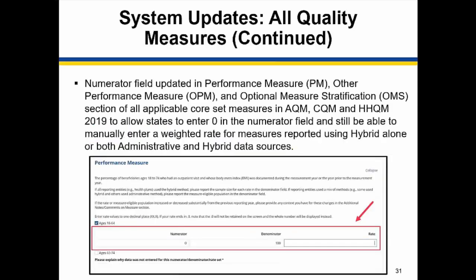The numerator field within the Performance Measure, Other Performance Measure, and Optional Measure Stratification section of all applicable core measures has been updated to allow states to enter zero in the numerator field and still be able to manually enter a weighted rate for measures reported using hybrid alone or both administrative and hybrid data sources.